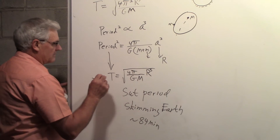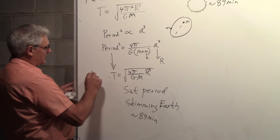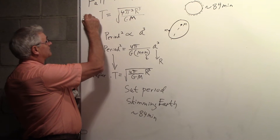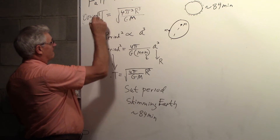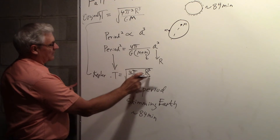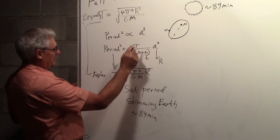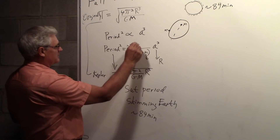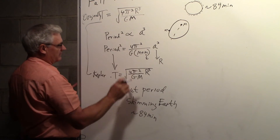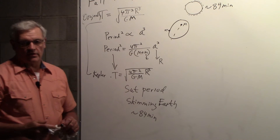You can see from Kepler's expression and our original expression that they're equal: 4π²R³/GM in both cases. This is a beautiful connection between the fall-through-Earth problem and orbital mechanics.